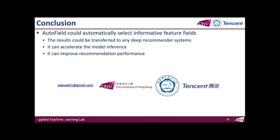In conclusion, in this paper we propose an automated machine learning based framework which could select the optimal feature fields for deep recommender systems. The selection result can be transferred to any deep recommendation model to accelerate model inference and improve model performance. For more details, please refer to our paper. If there are any questions, please feel free to ask me now or drop me an email anytime. Thanks for listening.